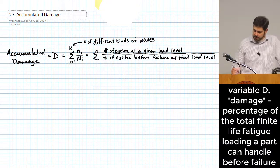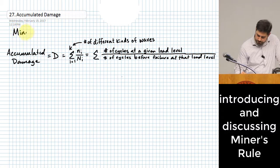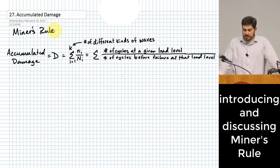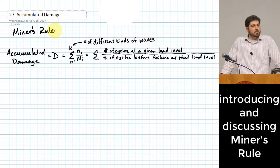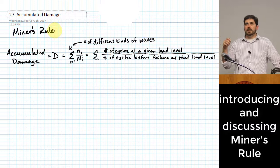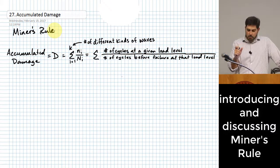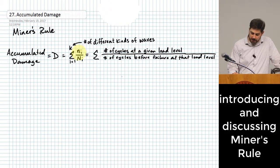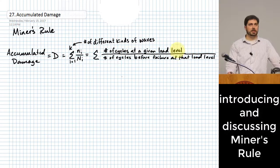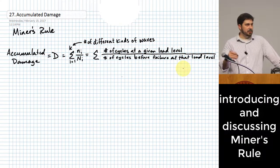This rule right here has a name — this is Miner's Rule. Miner's Rule says that if you want to know the accumulated damage, you look at the different kinds of stress waves that have been applied to the part — cyclic stresses that have happened over a period of time. Each one of those waves has contributed to the overall damage based on a fraction: lowercase n is the number of cycles done at a particular load level, divided by the number of cycles that it would take to fail the part at that load level.